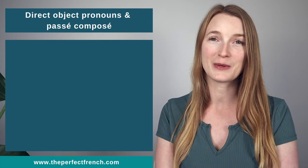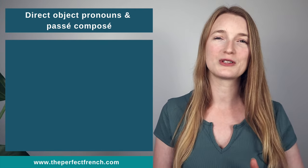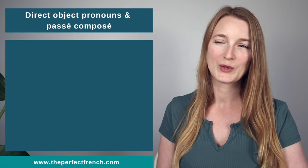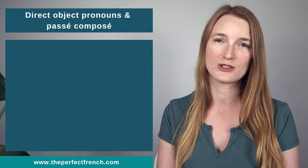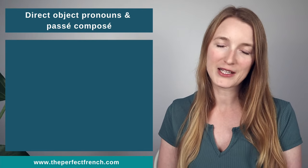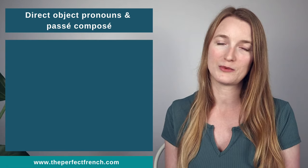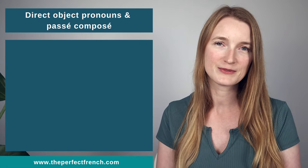Now the direct object pronoun and the passé composé. The passé composé is made of two verbs — the auxiliary and the past participle. Today we focus on the passé composé with avoir. With avoir, the past participle does not agree with the subject — unlike the passé composé with être. Instead, it agrees in gender and number with the direct object pronoun when that pronoun is placed before the verb. We can add E, S, or ES to the past participle accordingly.